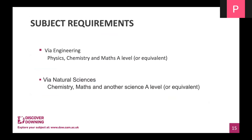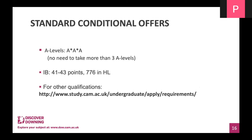Dr. Cameron Younes will go into more detail about subject requirements and the different routes into chemical engineering at Cambridge. Briefly, you can go via engineering — where physics, chemistry, and maths A-level or equivalent are compulsory — or via natural sciences, where chemistry, maths, and another science A-level are compulsory. We'd be looking for students to have two A-stars and an A at A-level, or 41 to 43 points for IB. For Scottish Highers or other qualifications, check the website for conversions.